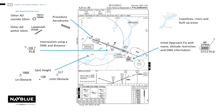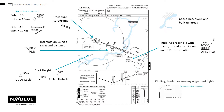Intersection or reporting points with name, altitude and DME distance. Note: no coordinates will be shown on the IAC charts. Circling lead-in runway alignment lines with code and colour in text close to the symbol.